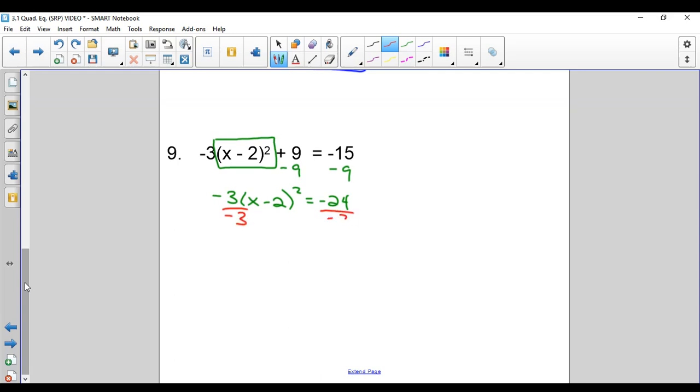So that's gone. X minus 2 squared equals positive 8. Square root both sides. Get X minus 2 equals, this breaks into 4 and 2. So 2 radical 2 plus or minus. See, I almost even forgot it.